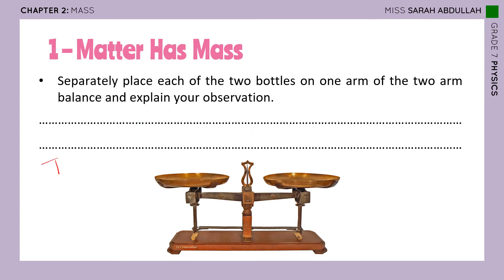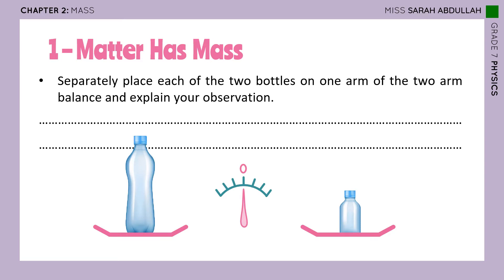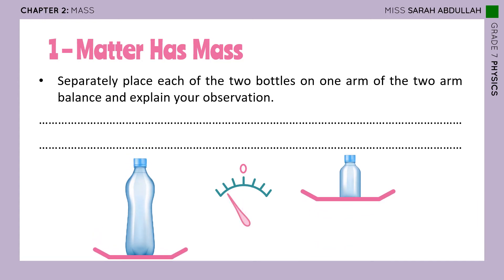This is called a two-arm balance — it has one arm and two. Now, how do we use it? Place each of the two bottles on one arm of the two-arm balance and explain your observation. So we place the big bottle and the small one on the two plates of this two-arm balance. What happened is that the plate carrying the big bottle went down more than the plate carrying the small bottle.